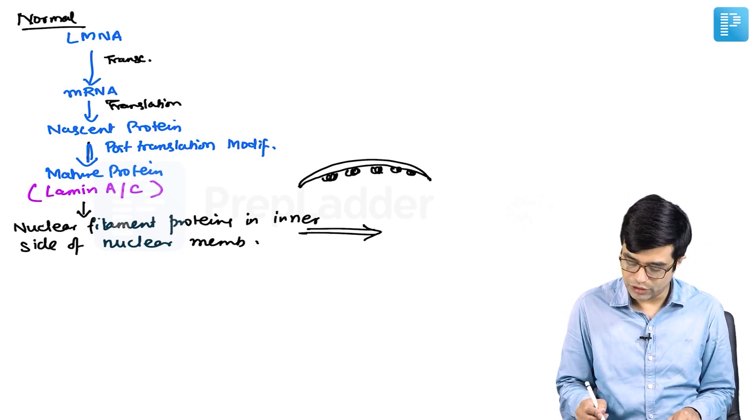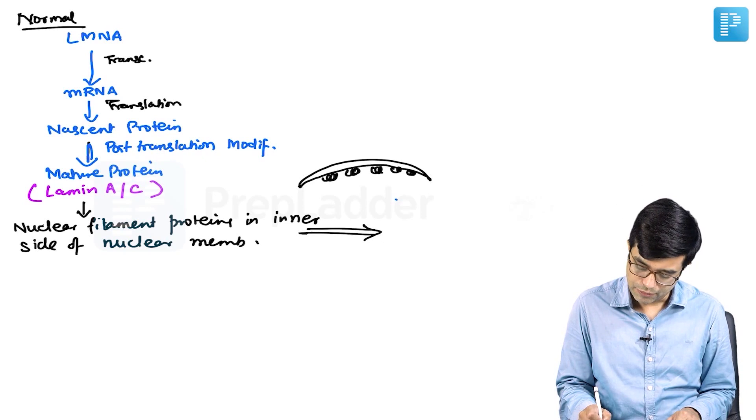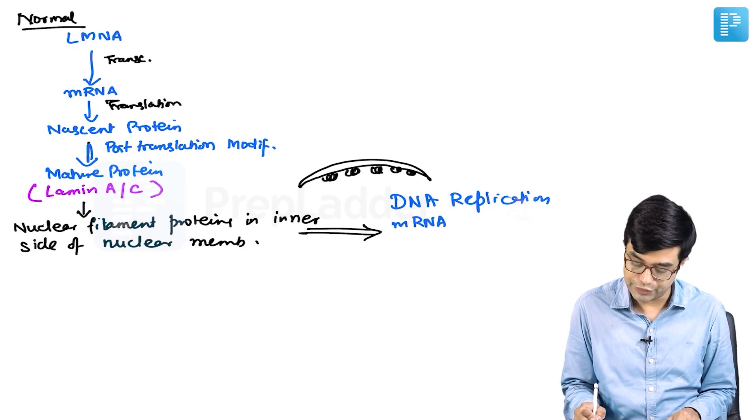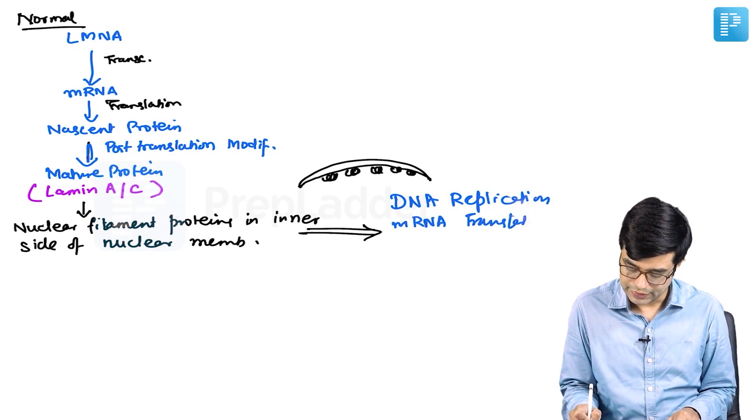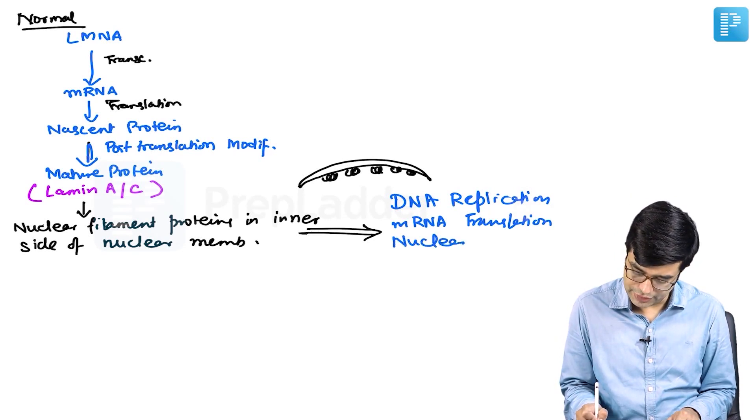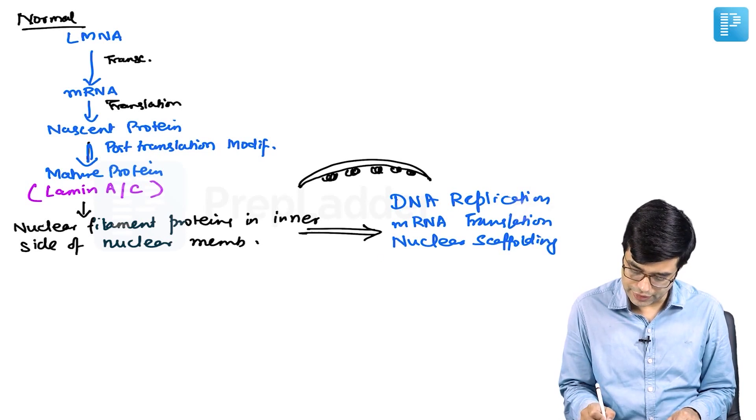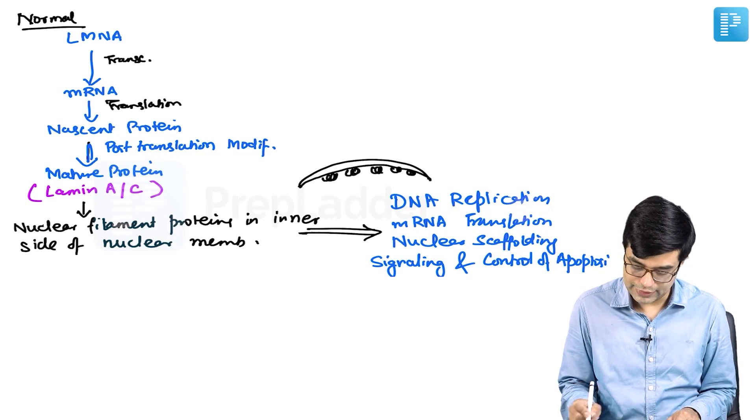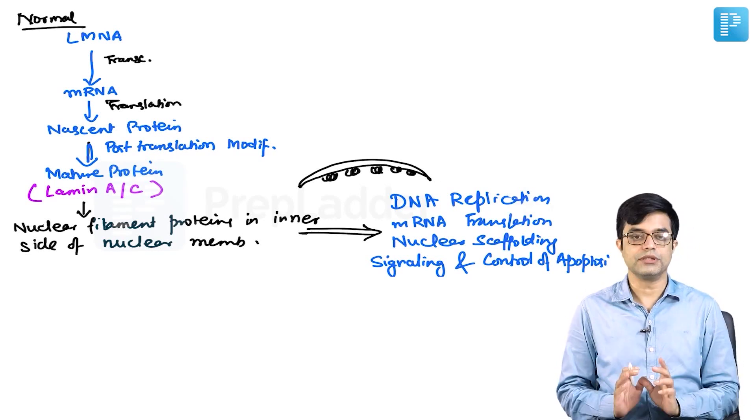They are involved in processes like proper DNA replication, proper mRNA translation of various proteins. They play a role in nuclear scaffolding, nuclear signaling, and control of apoptosis. This is what is happening in a normal person.